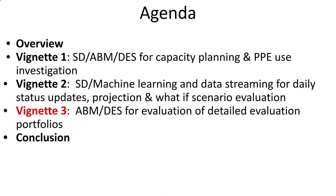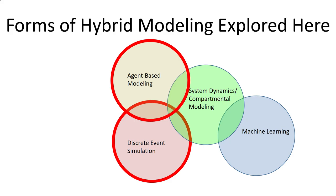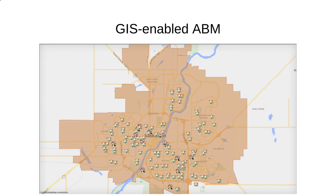The motivations for hybrid modeling in Vignette 2 were predominantly focused on comparative advantages of each approach—machine learning versus dynamic modeling, each complementing the other in extraordinary ways, and different analysis needs across the models. Machine learning supports inferencing and estimation methods; dynamic modeling supports projection and what-if questions. Finally, Vignette 3 is going to combine agent-based modeling and discrete event simulation for detailed evaluation of intervention portfolios.